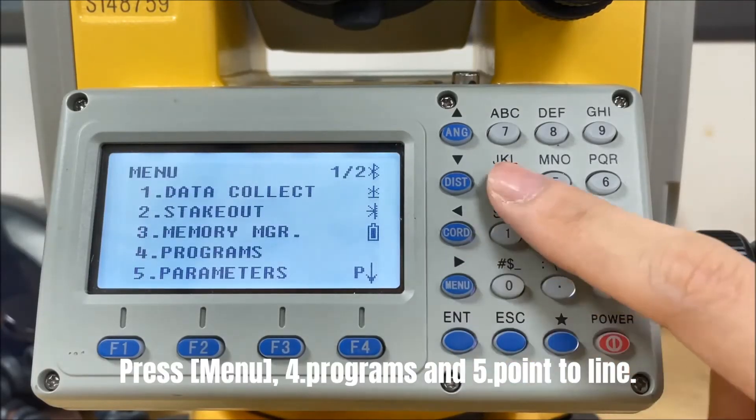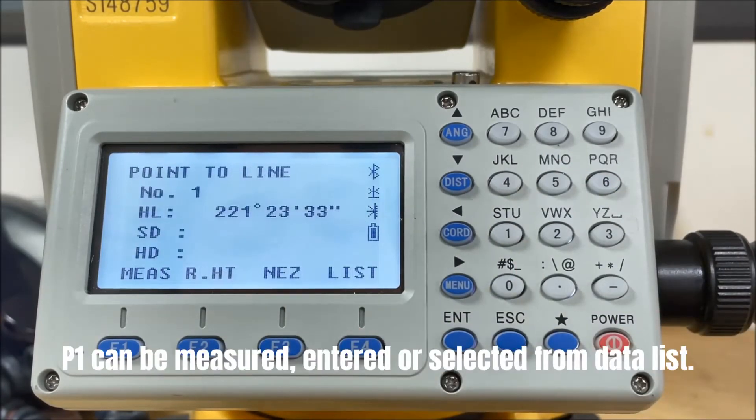Press Menu, Programs, and Point to Line. P1 can be measured, entered, or selected from data list.